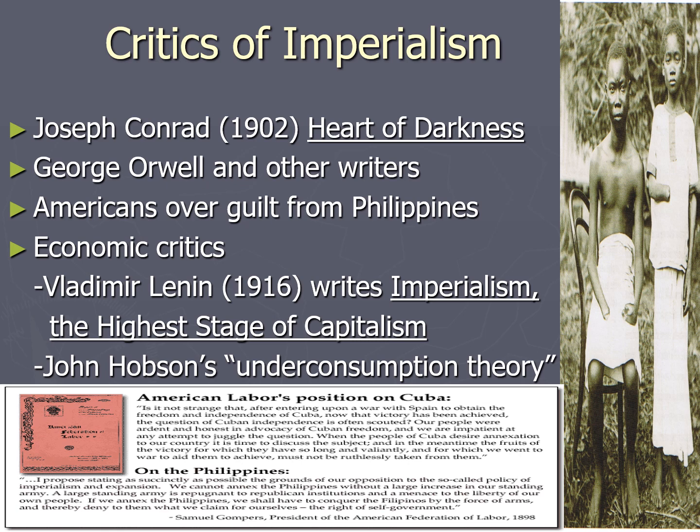Then there were economic critics like Lenin of Russia, who wrote in 1916 that imperialism was the natural side effect of capitalism — that competition for natural resources forces countries to try to control other countries for their resources. And John Hobson, who said that capitalism's boom and bust cycles were caused by over-saving of the rich, which forced the poor to under-consume, and that these unequal distributions of wealth force countries to seek expansion through empire.